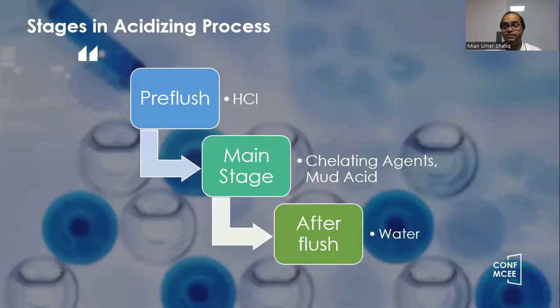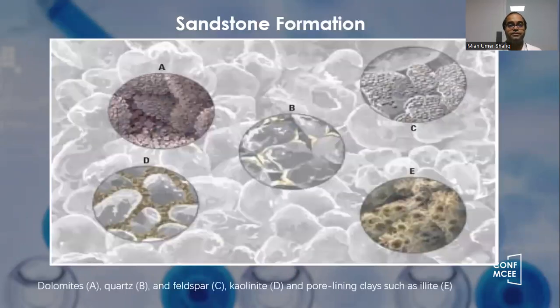Therefore, the acidizing process consists of three stages: the pre-flush stage, the main acid stage, and the after-flush stage. We use different fluids to complete the process of acidizing.